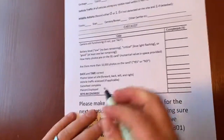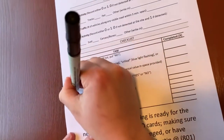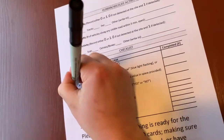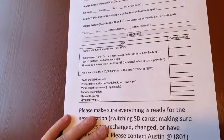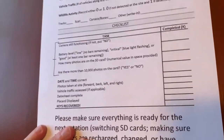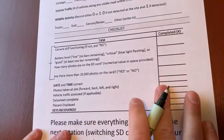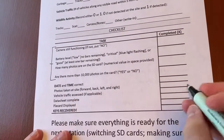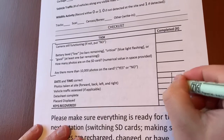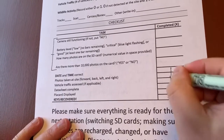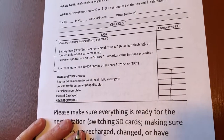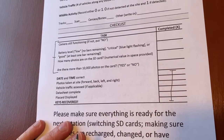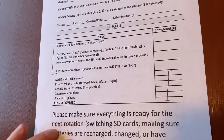The takedown data sheet is very similar to the check one. Once again, you have those spots from the check data sheet showing how many photos and whether the camera is still working. But now your checklist is much smaller because instead of making sure the camera is still running, you're just making sure that you've taken it down.